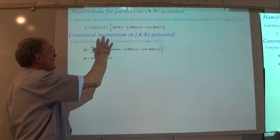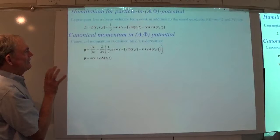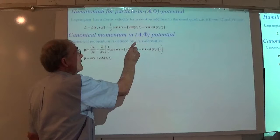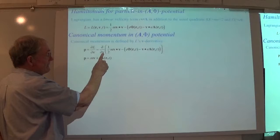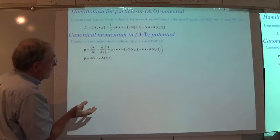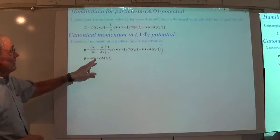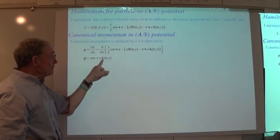Here's our Lagrangian, and we can calculate the canonical momentum — remember this is supposed to indicate a covariant momentum. The canonical momentum is defined by a velocity derivative. I take a V derivative of this Lagrangian — it's easy from the kinetic term, that just gives MV — but when I take a V derivative of the V·A term, I get the vector potential times the charge.